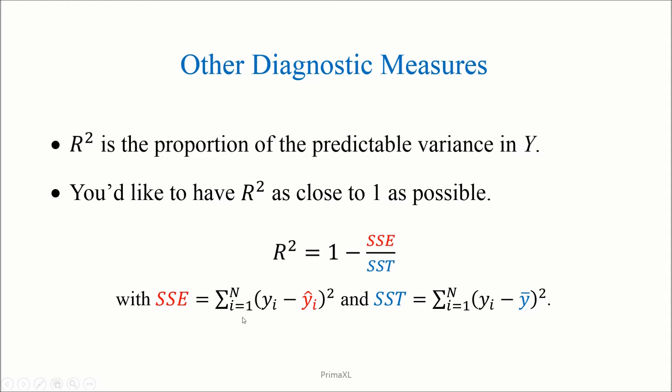SSE gets smaller when the predicted Y gets closer to the real value, while SST remains the same because we are subtracting the constant average from the real values. As the ratio SSE over SST gets smaller, the R-square gets close to 1.